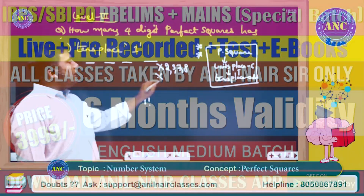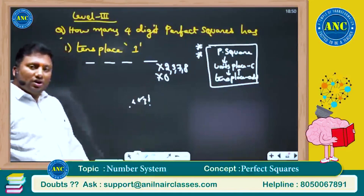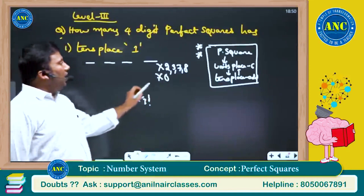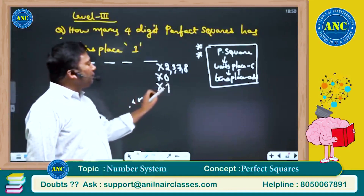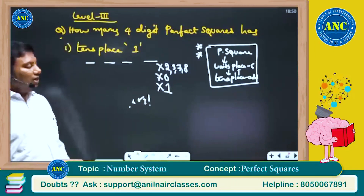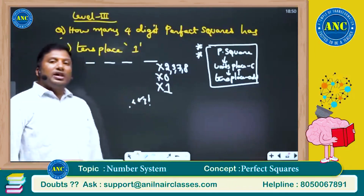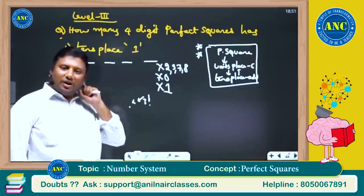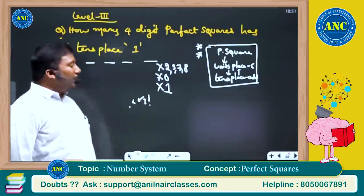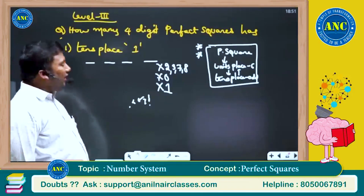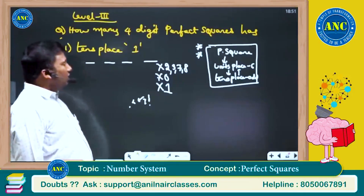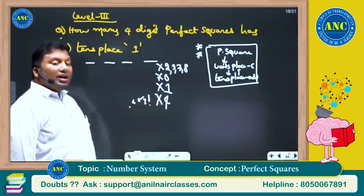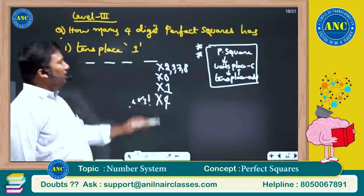A perfect square ends with an even number of zeros, so ending in 0 is not possible here. If a perfect square ends with 1, the tens place will be even: 9²=81, 11²=121, 19²=361, 21²=441, 29²=841, 31²=961, 39²=1521 — all end in 01. A perfect square ending with 4: the tens place will always be even.